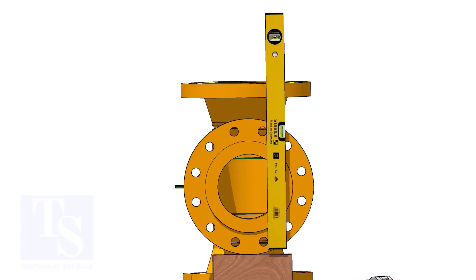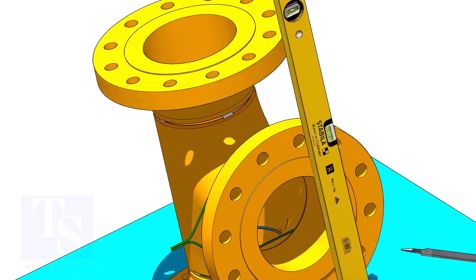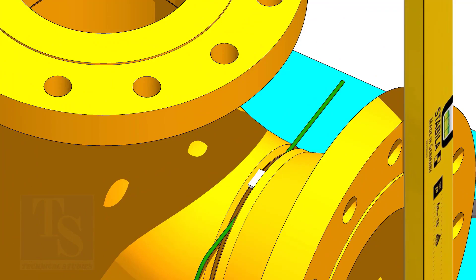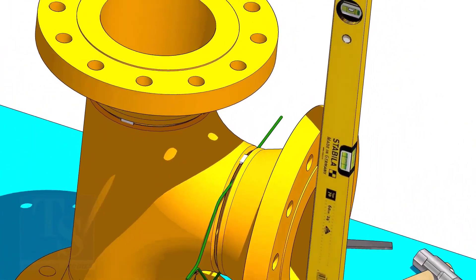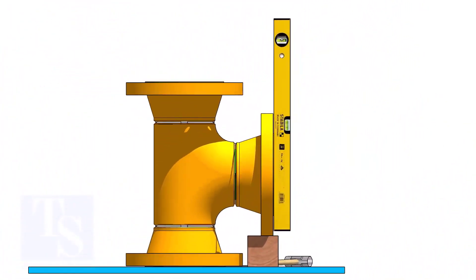Correct the plumbness of the flange holes, as shown. Tack weld on the top side. Correct the flange vertically, and tack weld below.